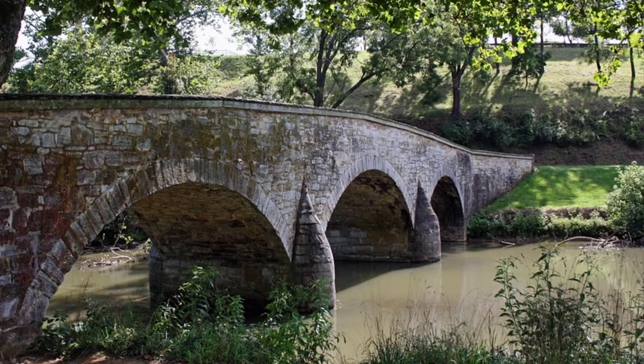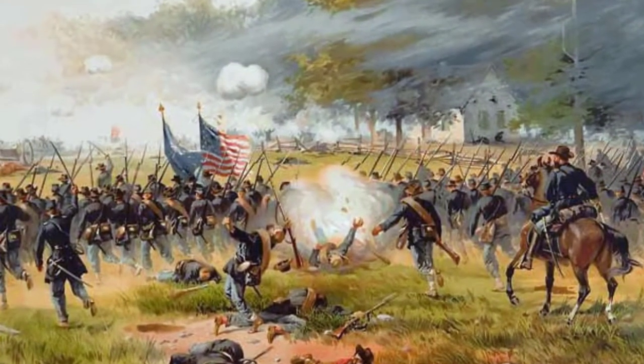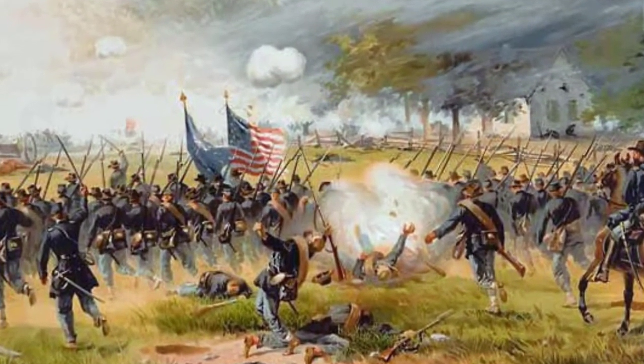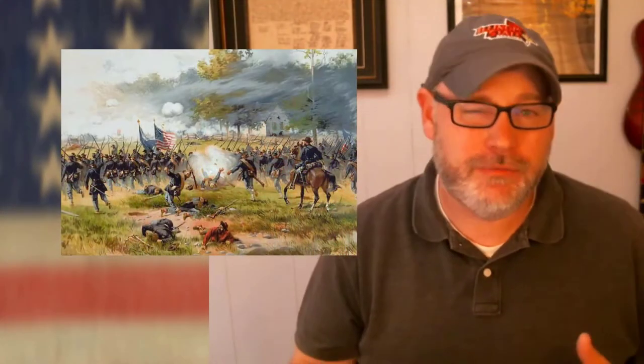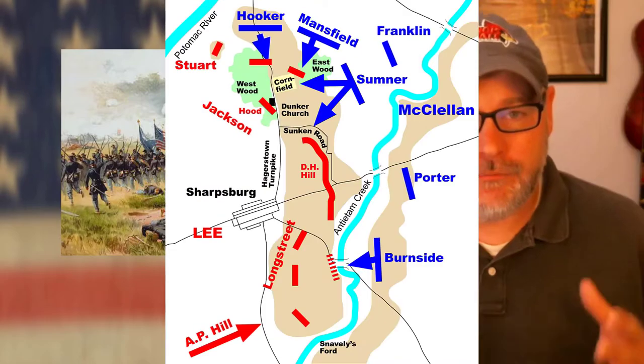On Wednesday morning, September 17th, the Union began to attack in what would be the bloodiest day in American history. Union forces numbered around 87,000 troops, while Confederates numbered around 45,000. The battle can be broken down into three major fronts.